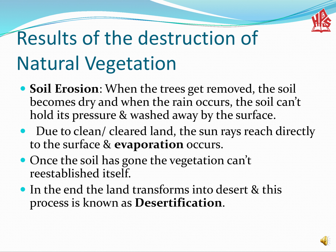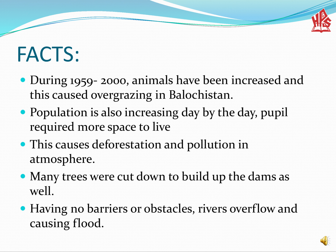Due to cleared land, the sun's rays reach directly to the surface and evaporation occurs. When water evaporates from the surface in the form of water vapors, this is called the process of evaporation. Once the soil has gone, vegetation cannot reestablish by itself — meaning it cannot grow naturally again. In the end, the land is transformed into a desert, and this process is known as desertification.